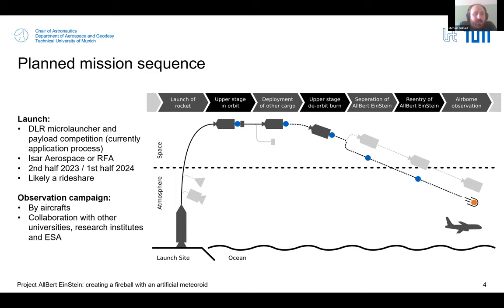About the mission: we want to launch our meteoroids with the micro launcher and payload competition by DLR. We are currently in the application process. The launch providers are ESA Aerospace or Rocket Factory Augsburg, and the launch should be in the second half of 2023 or the first half of 2024. After launch, our experiment will be attached to the upper stage in space. Most likely it will be a rideshare, so there will be deployment of other cargo.